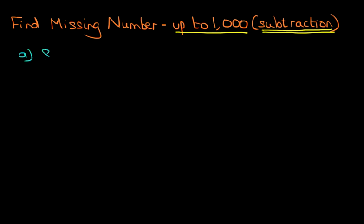Let's have a look at our first example. We have 873 minus something equals 642. So we've got quite large numbers there. Now the first step is that we're going to reorder the question to make sure that the box is on one side of the equal sign and the numbers are on the other side.